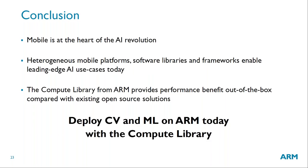In conclusion, mobile is at the heart of the artificial intelligence revolution. There's a large number of use cases and exciting applications coming to mobile today, and mobile platforms are a fantastic vehicle to deploy this into the market. ARM's mobile platforms, software libraries, and frameworks enable leading-edge AI use cases today, and ARM is investing in these areas to make it easier to deploy them on mobile. The compute library from ARM provides benefits in terms of performance, ease of programming, and cost reduction out-of-the-box, and is a significant improvement over what was available before in the open-source community. My encouragement to all of you is to take advantage of this library and use it to deploy optimized computer vision and machine learning software on ARM today.